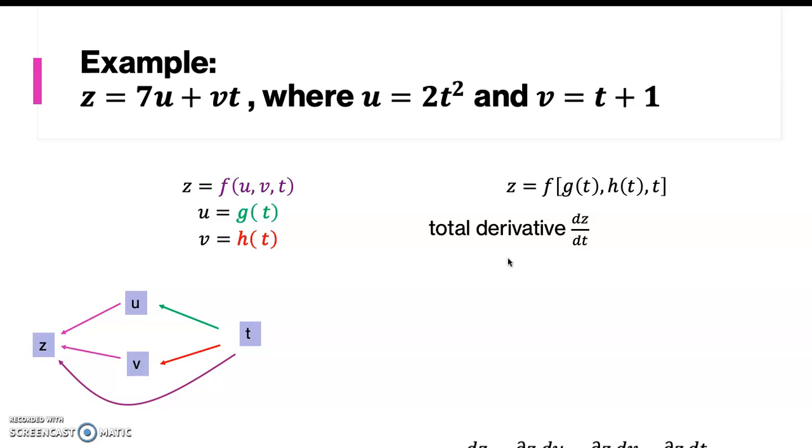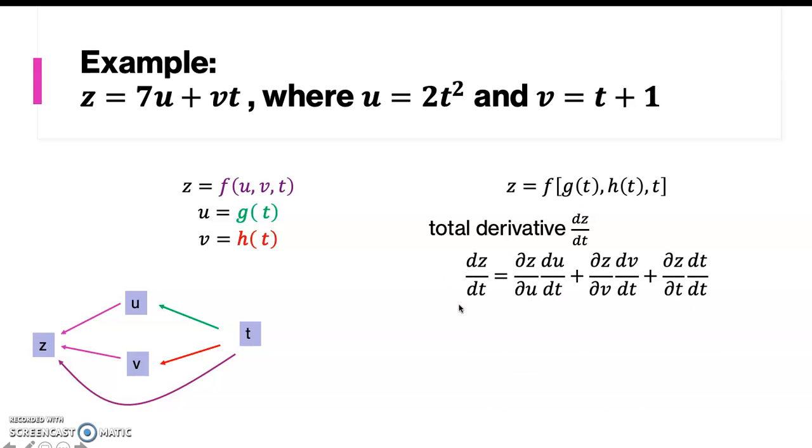To get it, we do it as follows: ∂z/∂u times du/dt plus ∂z/∂v times dv/dt plus ∂z/∂t times dt/dt.